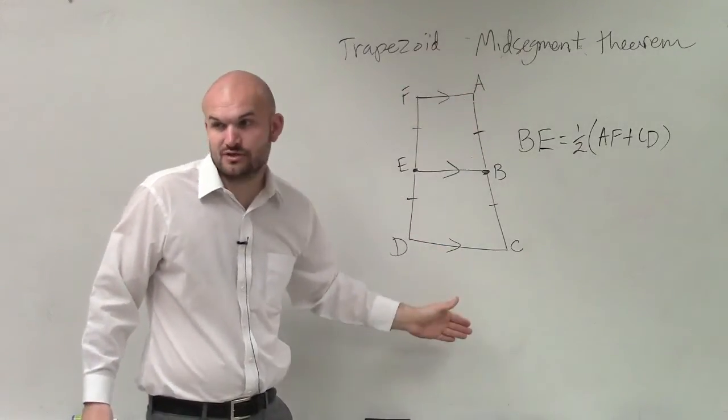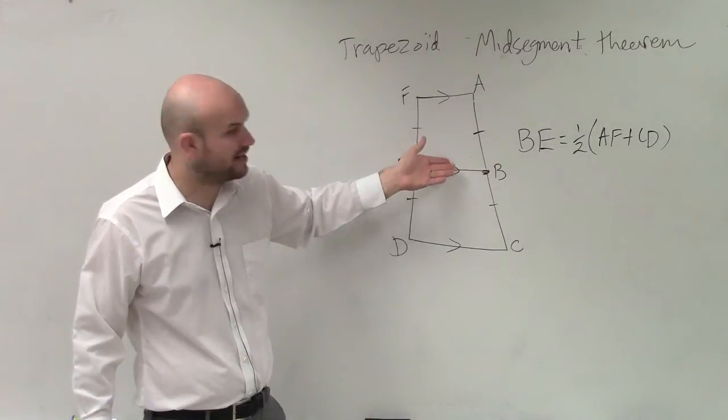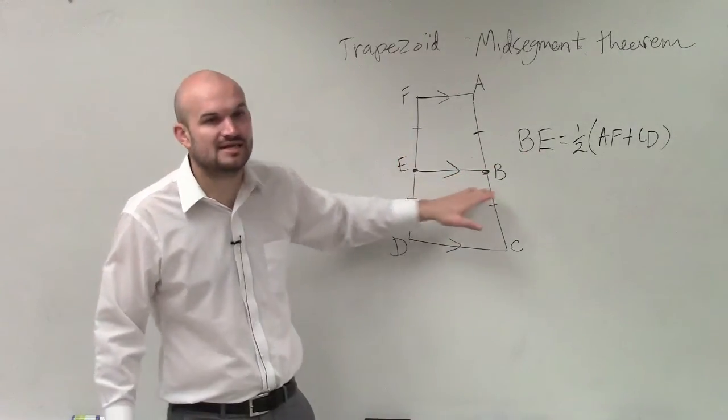if you add the lengths of your two bases and multiply it by one-half or divide it by 2, then you will have the distance of the midsegment.